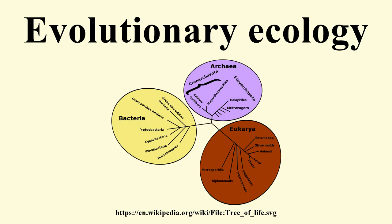Notable evolutionary ecologists include Charles Darwin, whose theory of natural selection is essential background to understanding evolutionary ecology and had explicitly included population dynamics; George Evelyn Hutchinson; Robert MacArthur; Eric Pianka; Michael Rosenzweig; David Black; and R.A. Fisher, whose 1930 fundamental theorem of natural selection recognized the power of rigorous application of the theory of natural selection to population biology and evolutionary models.